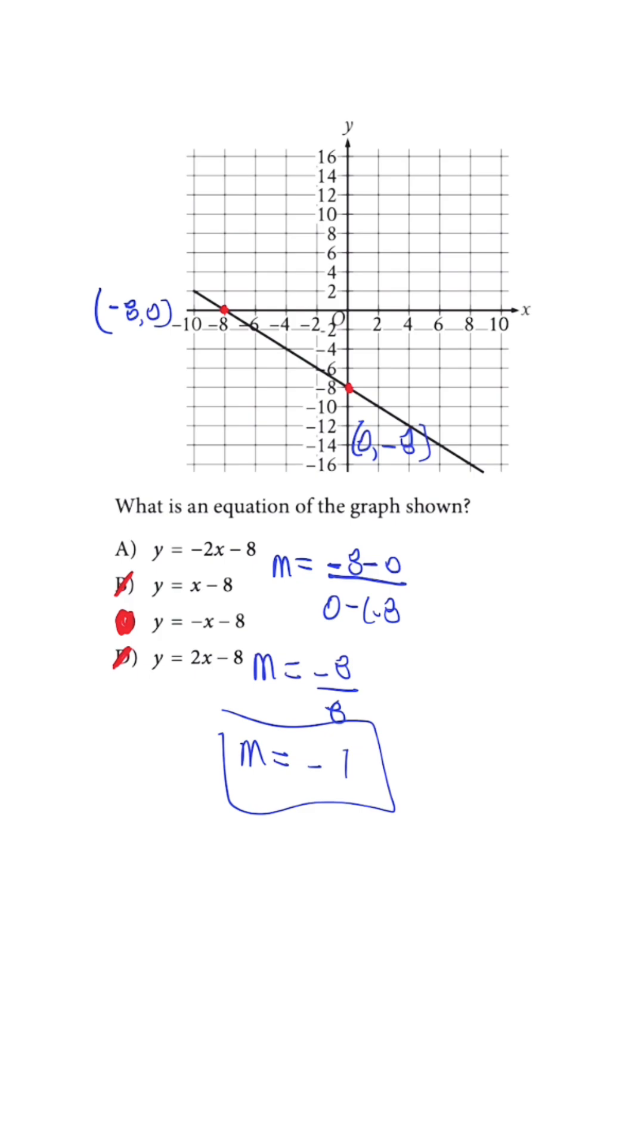So you can use the slope formula and figure out the slope. Or if you understand the intercepts with the X and Y, they have the same number, meaning eight here or eight there, or let's say we had six and six, the slope is going to be one. You could skip the slope formula.